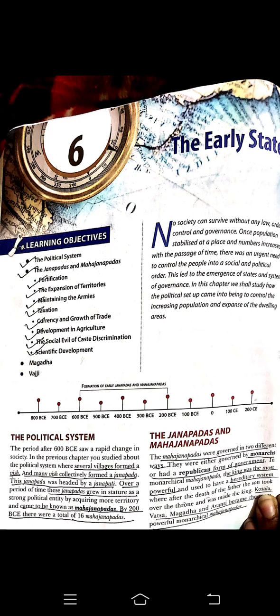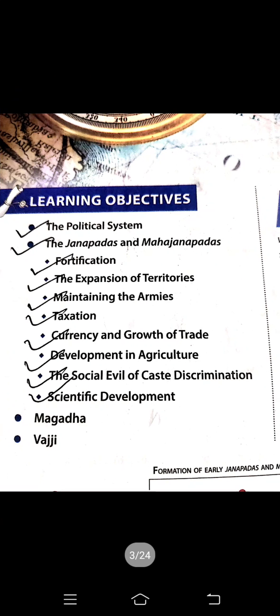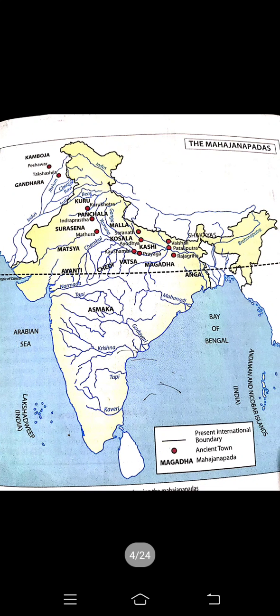The chapter is called 'The Early States.' In this chapter we have already read about the political system of these states. We read about the many clans which collectively formed a Janpada, and a Janpada was headed by a Janpati. Over time, these Janpadas grew in structure as strong political entities by acquiring more territories and became Mahajanpadas.